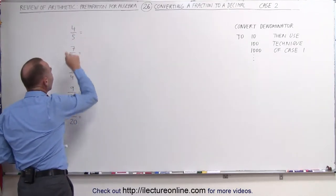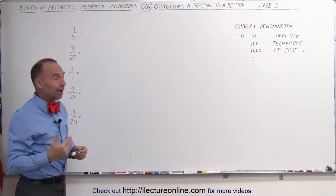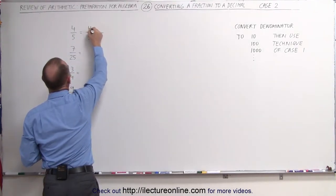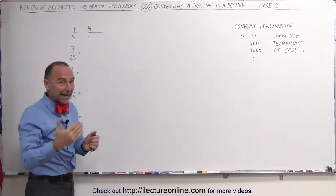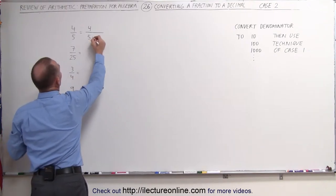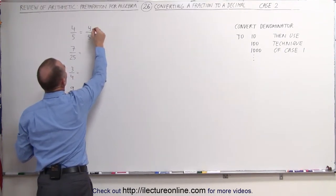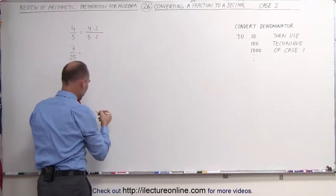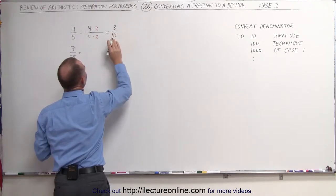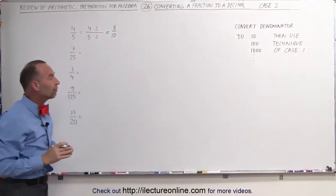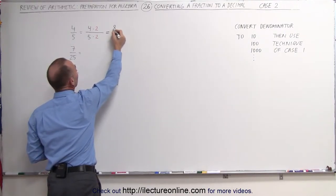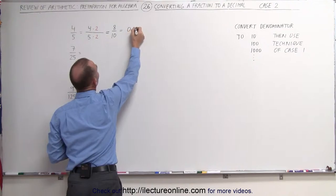Here you can see that 5 fits evenly into 10 — 2 times 5 is 10. What we're going to do is multiply the denominator times 2 to make it into a 10, and of course we must also multiply the numerator times 2 to keep everything the same. This then becomes 8 divided by 10. We then move the decimal place over 1, and this becomes 0.8.